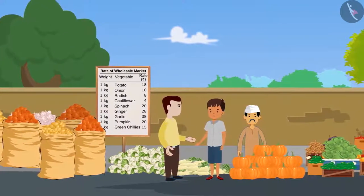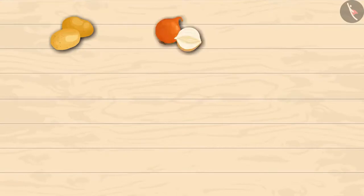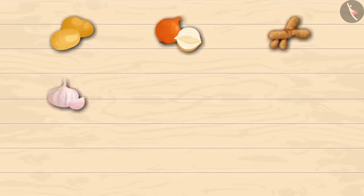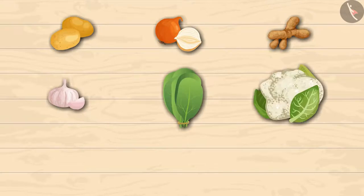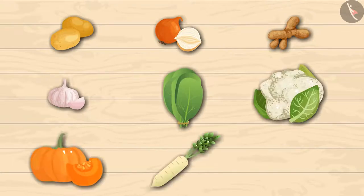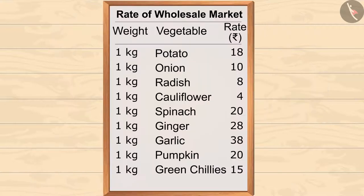Vimal gets up early every morning and goes to the wholesale market to buy vegetables. Today he bought potatoes, onions, ginger, garlic, spinach, cauliflower, pumpkin, radish, and green chillies. You can see their prices according to the wholesale market.